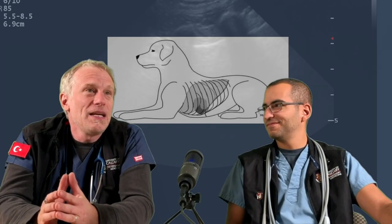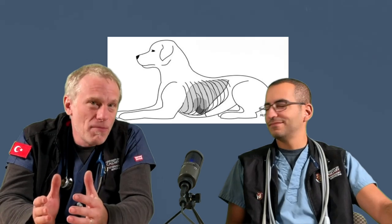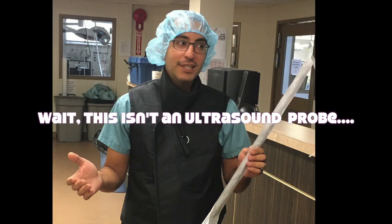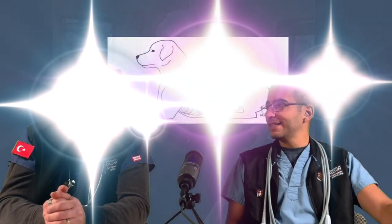What are we going to be talking about specifically with the glide sign? What we want to do is look for the key anatomic landmarks that will allow us to identify the pleural line. And then with that pleural line, we're going to talk about the glide sign and what that means, but we're also going to throw in some tricks of the trade.